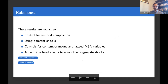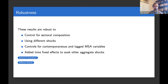These results are robust to controlling for a measure of sectoral composition — broad measures of industry, with work ongoing to make these controls finer — by using different sources of shocks, not only Romer-Romer shocks but also shocks developed by Miranda-Agrippino and Ricco in 2020. They hold when we control for contemporaneous and lagged variables at the metropolitan area level and when we add time fixed effects to absorb other aggregation factors.